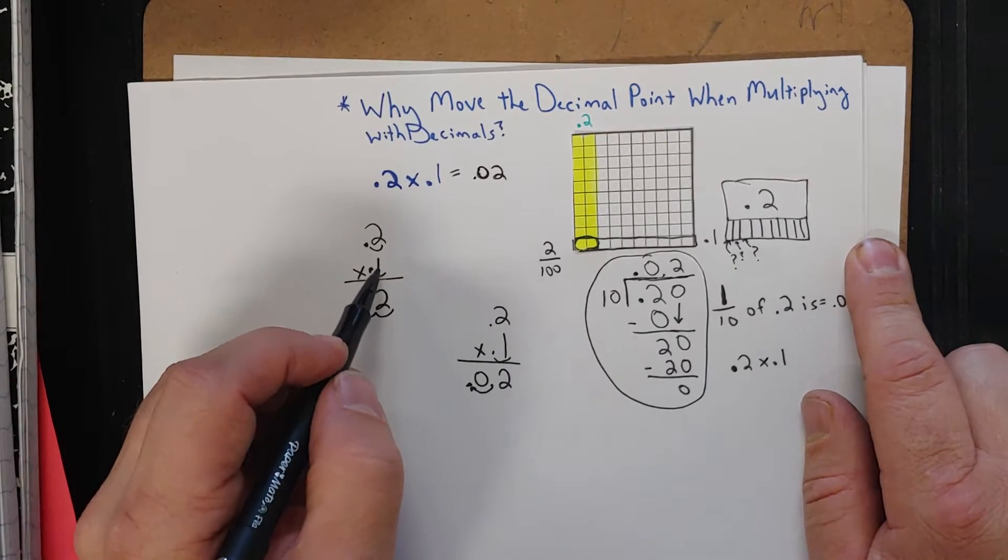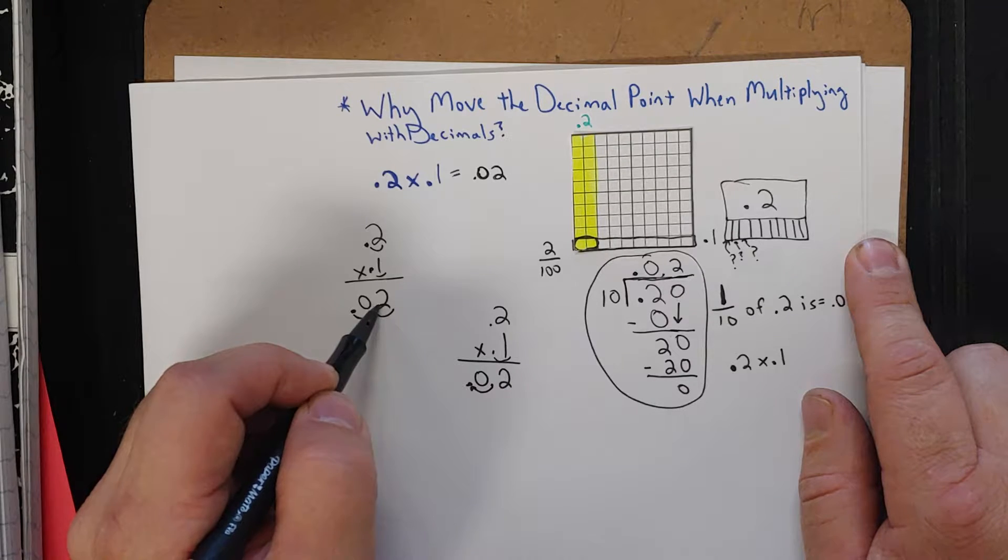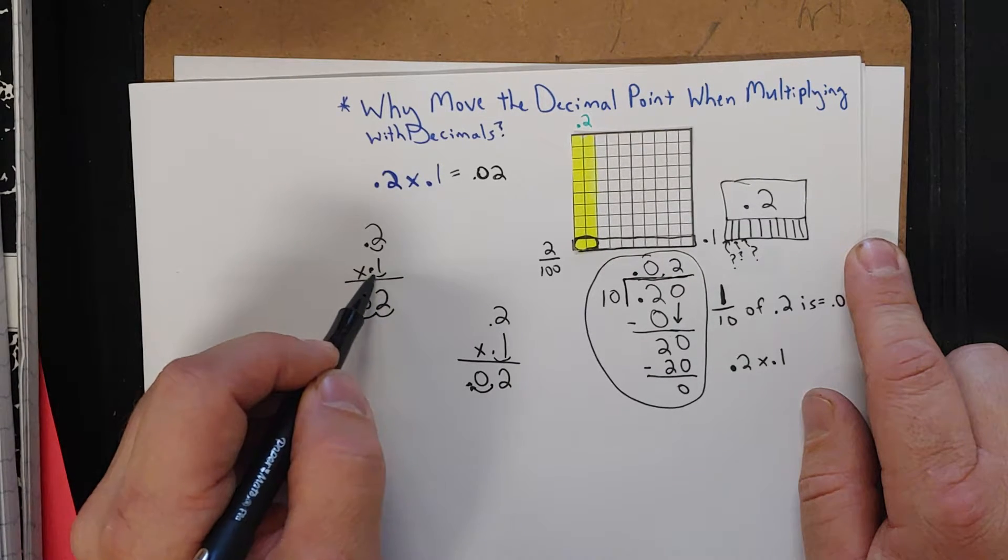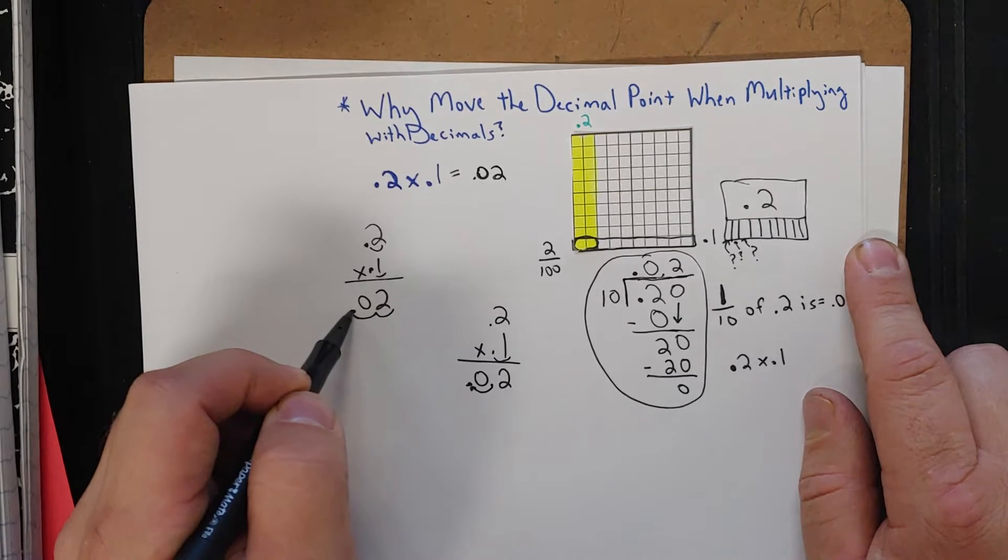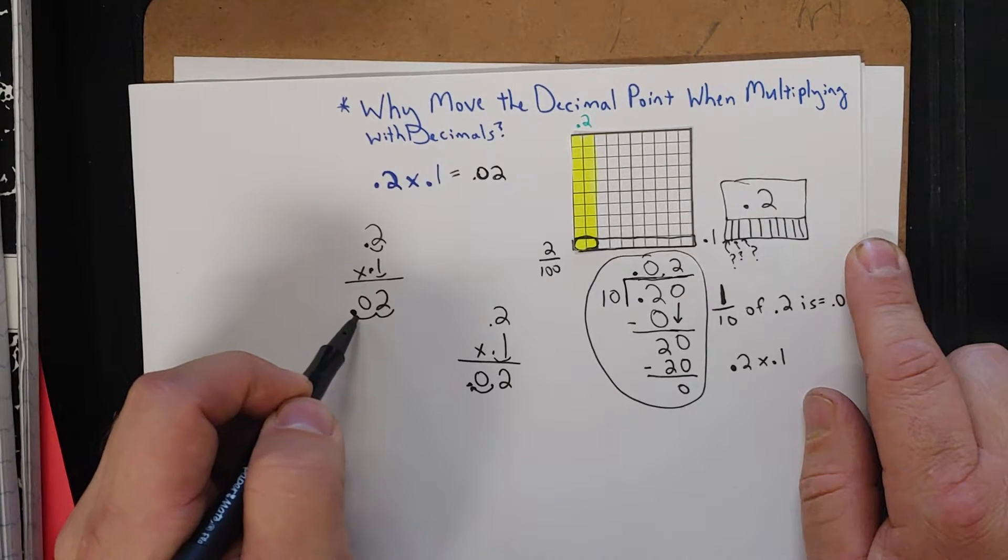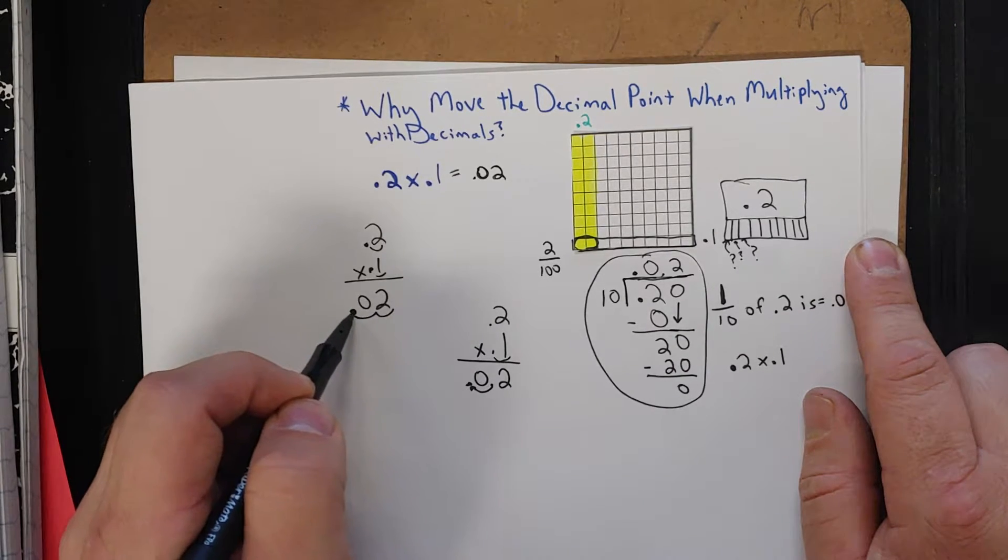So essentially what you're doing is saying, okay, I'm starting here with this decimal 2 tenths, right? But I didn't take 1 whole group, I took 1 tenth of a group. So I needed to divide by 10 again. And that's what moves that decimal over. Dividing by 10 is where that decimal is making that decimal move over.